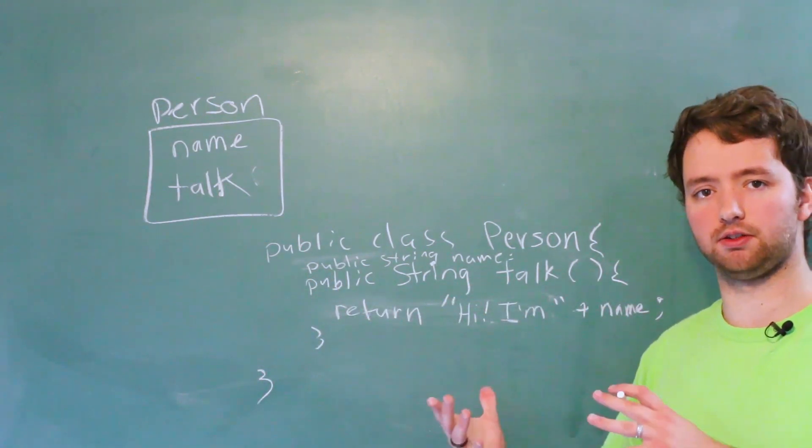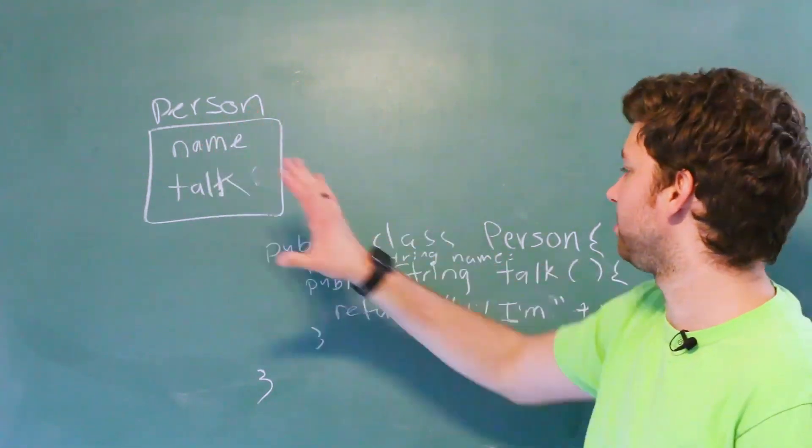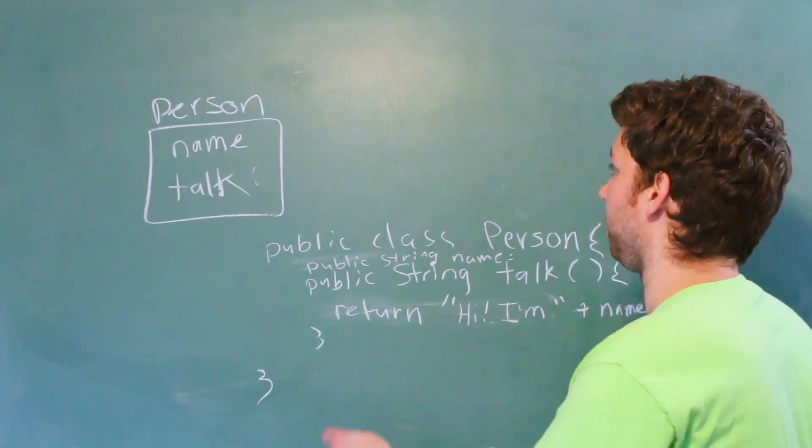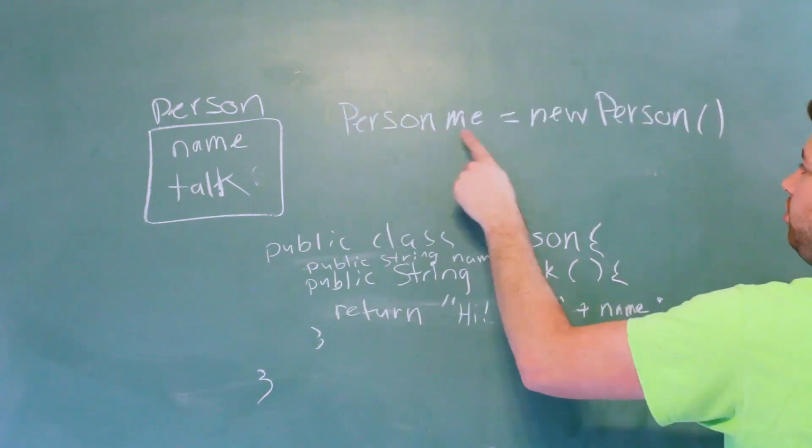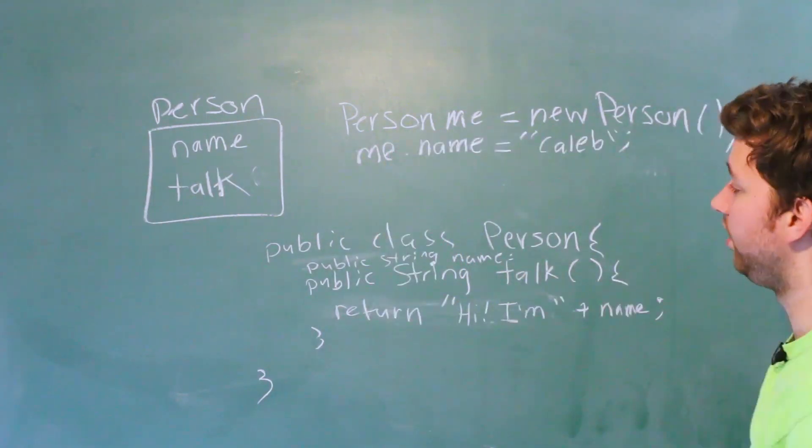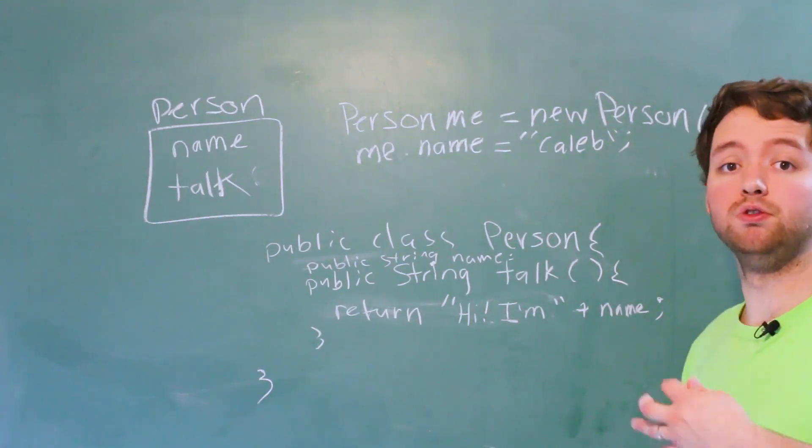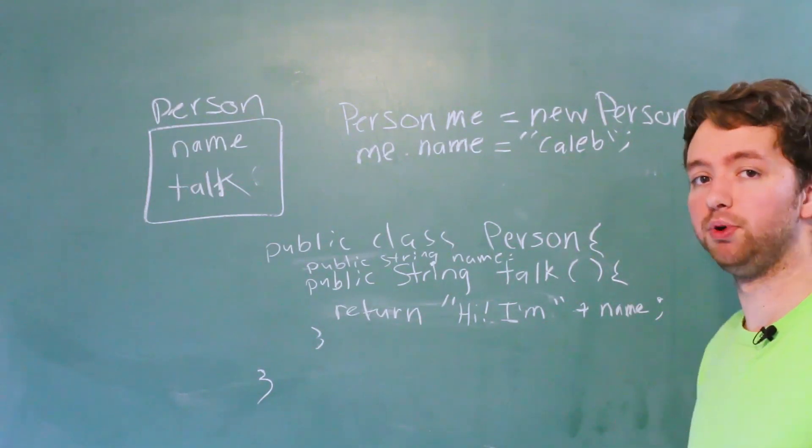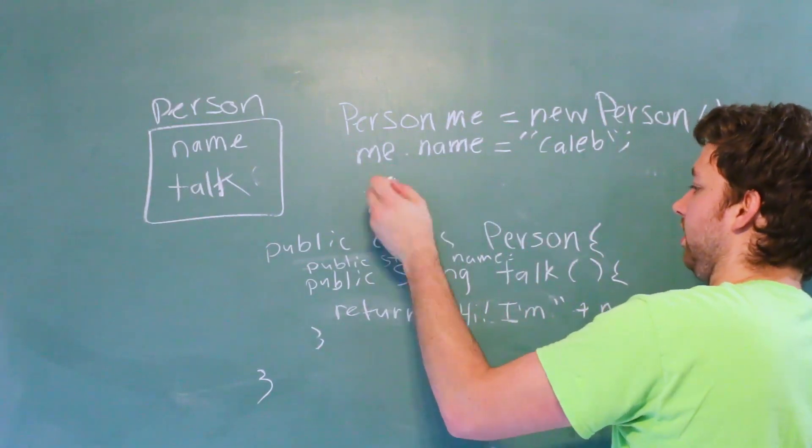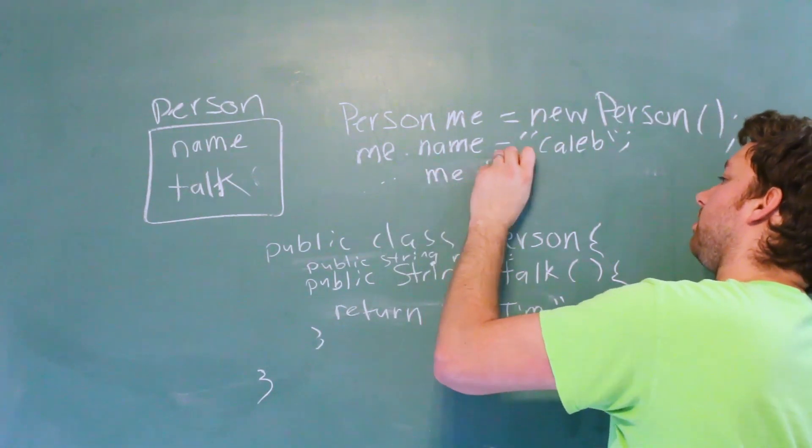But let's talk a little bit more about using it, because that's a little bit more important for what we're going to be doing at the beginning. So we define this person in code like so, and then we can use it like so, in another method somewhere else. We create a new person like so, and then we set a value for the name, and then we can use this method. And it's going to return a string, so you need to do something with that. So for example, you could output it. So you can write all the system dot out junk, but I'm just going to put dot dot dot, and then say me dot talk.